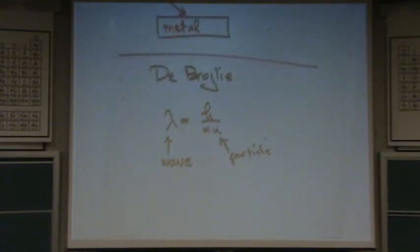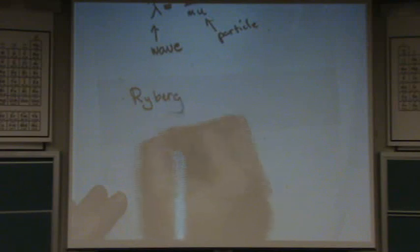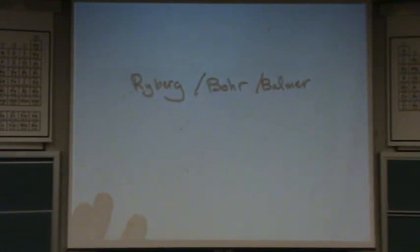So that's de Broglie. And then, finally, we have this stuff that Ryberg did. And I'm going to mix this with the things that Bohr did, because they turned out to have a lot of interaction. In your class, you may have also mentioned the Balmer equation. Balmer and Ryberg are pretty much interchangeable equations. And I tend to prefer Ryberg. It's just easier to use, I think.